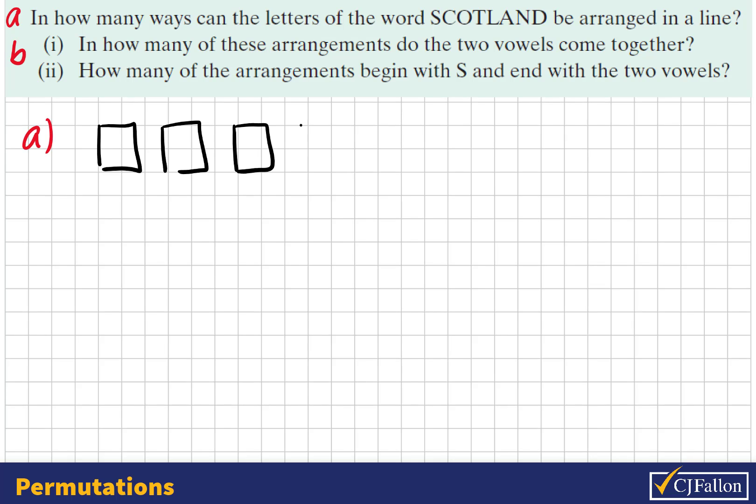To answer this question, let us create 8 tiles, one for each of the letters in Scotland, and imagine how many choices would we have for each position. The first letter could be any one of the 8 letters, so we have 8 choices here. The second letter, we have 7, then we have 6 left.